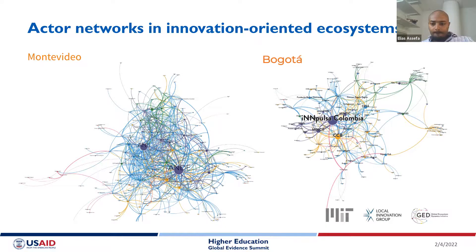At the top, we have key dimensions of the enabling environment — the rules of the game — including cultural institutional context, which refers to norms and regulatory frameworks; legal, regulatory, and policy context; and the market systems context, which provides the overarching structure in which the ecosystem is breathing in order to function.